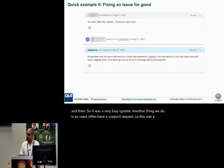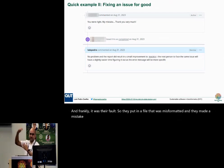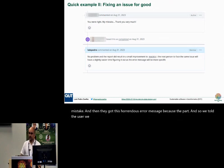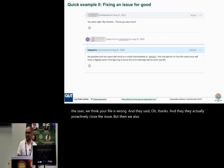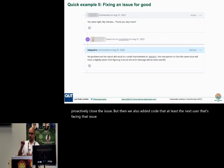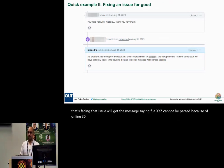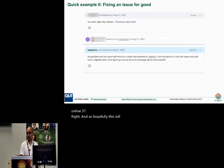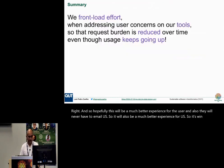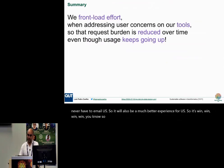Another thing we do: users often have a support request. In one case, a user submitted a misformatted file — frankly it was their fault — and they got a horrendous error message. We told the user we thought their file was wrong, they said thanks and proactively closed the issue. But we also added code so that the next user facing that issue gets a message saying 'file XYZ cannot be parsed because of line 37.' Hopefully a much better experience for the user, and they'll never have to email us — win-win.